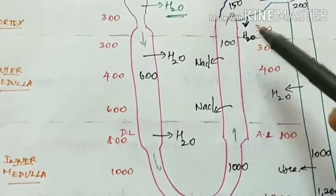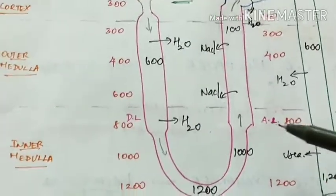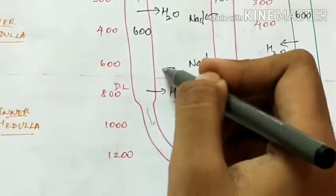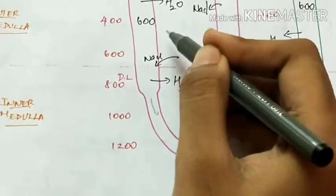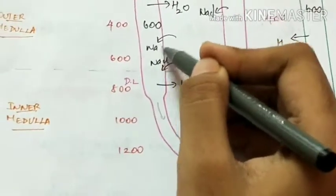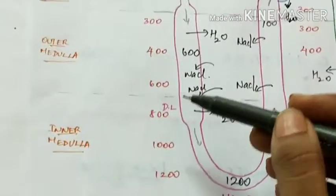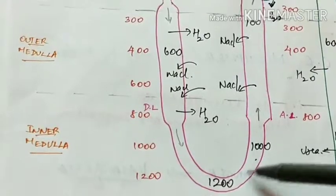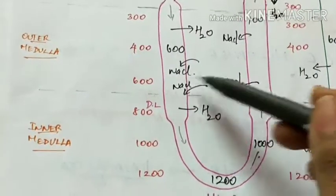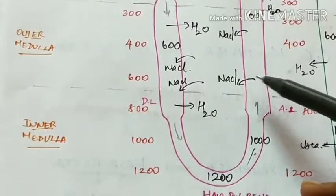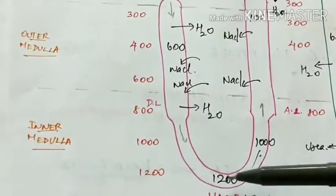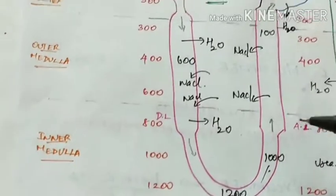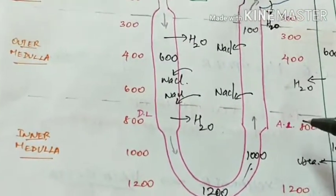Due to concentration gradient, sodium chloride diffuses from the medullary interstitium into the descending limb. From the descending limb, it reaches the ascending limb via the hairpin bend. So there is repeated circulation of sodium chloride ions between the descending and the ascending limb through the medullary interstitium, leaving only a small portion to be excreted in the urine.